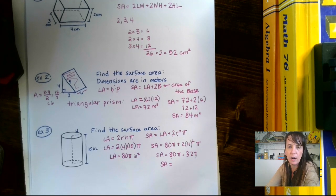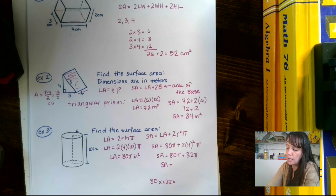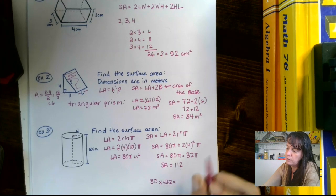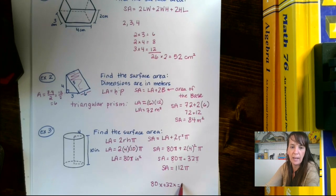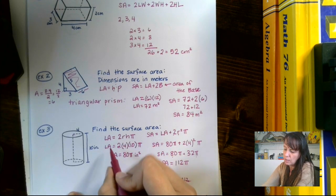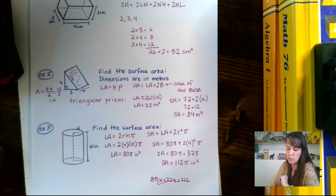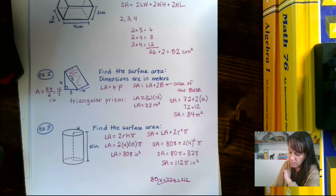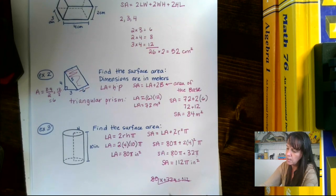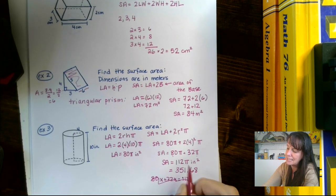So we get surface area equals 80 pi plus 32 pi. We can combine those because they both have pi — just like combining like terms: 80x plus 32x equals 112x. Same idea here, so surface area equals 112 pi inches squared. From this point, you'll probably see the book multiply by 3.14 to get the decimal form.